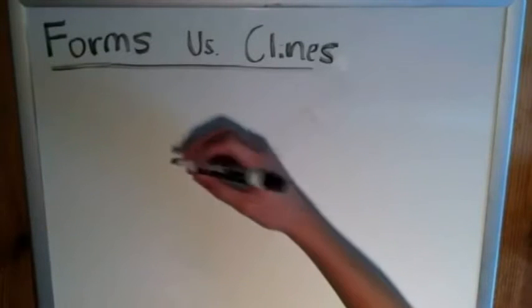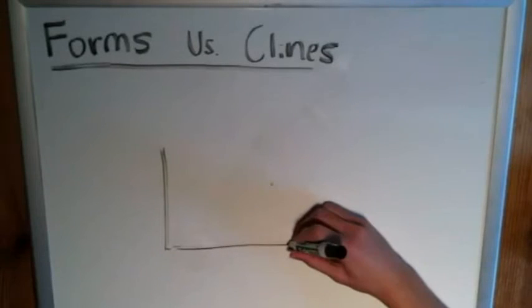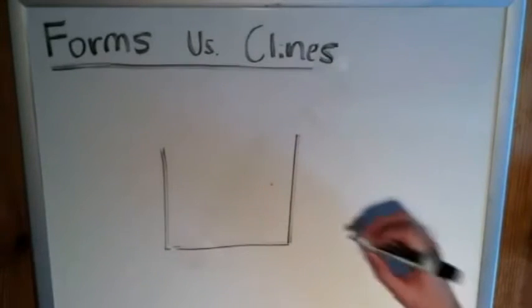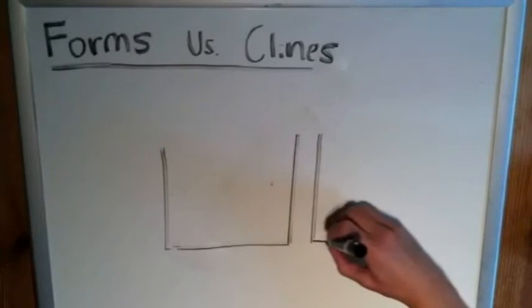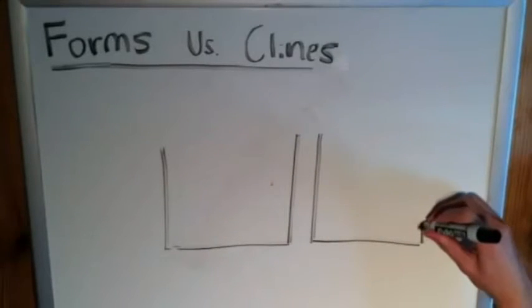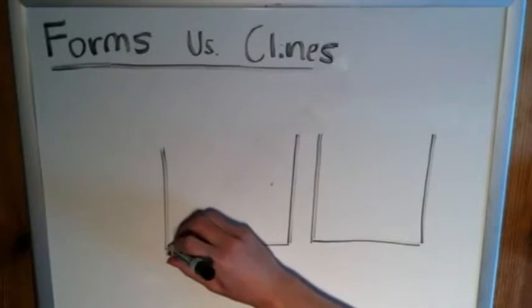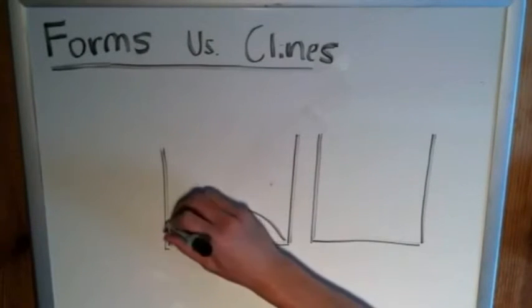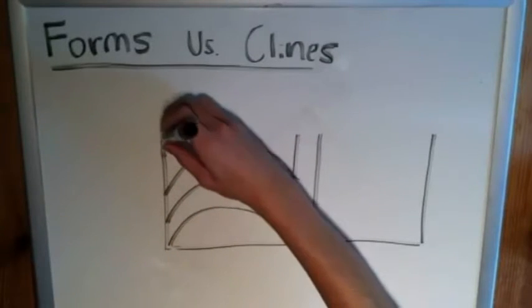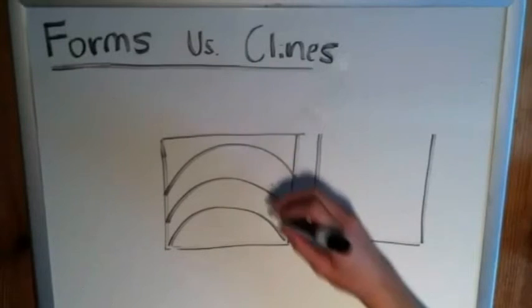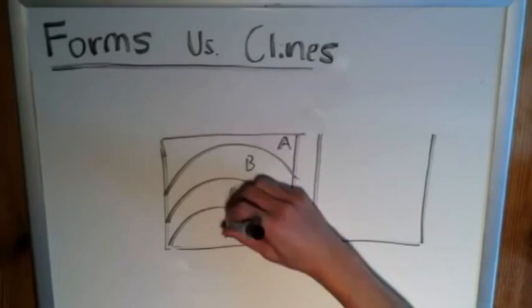So let's start by defining what an anticline and what a syncline is. I'll just draw them side by side here, with a little marker. We'll start over here. It's got an antiformal shape. We'll have A, B, C, and D.